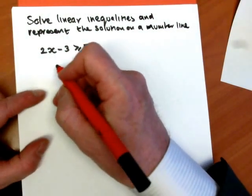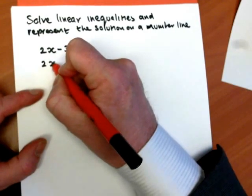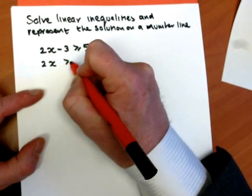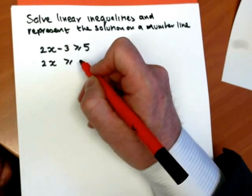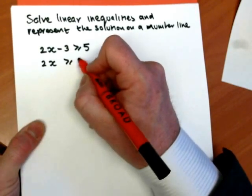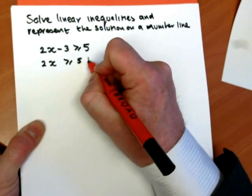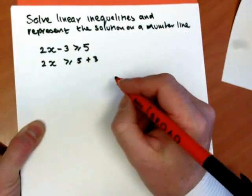So we work through this rather like an equation, it's rather like making x the subject. So we need to move the minus 3 over the inequality. So if we added 3 to both sides of the inequality, the inequality would stay the same. And so we can write 2x is greater than or equal to 5 plus 3.